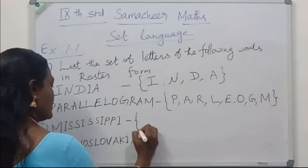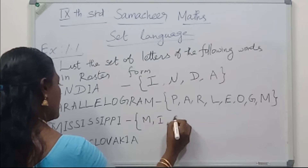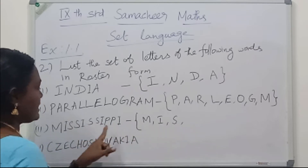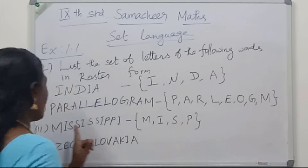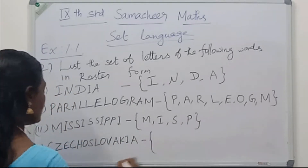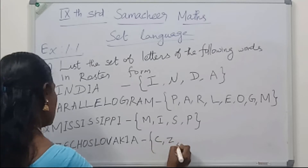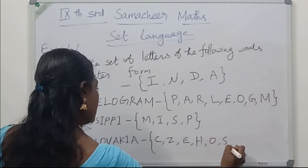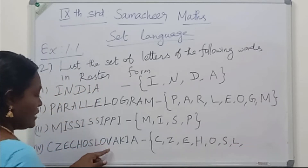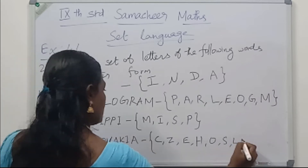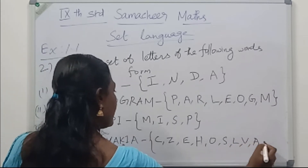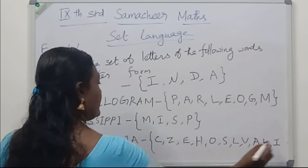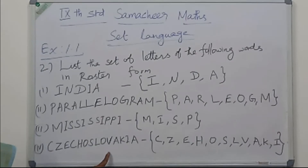See the 3rd word: 'Mississippi'. Writing in roster form: M, I, S — the next S, I, S, S, I are already written — then P. So the roster form is {M, I, S, P}. For 'Czechoslovakia': C, Z, E, C (already written), H, O, S, L, O (already written), V, A, K, I, A (already written). So the roster form is {C, Z, E, H, O, S, L, V, A, K, I}.